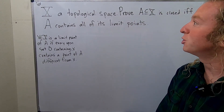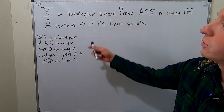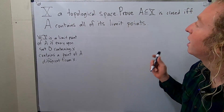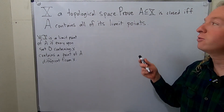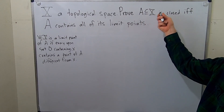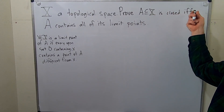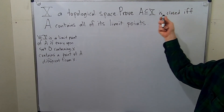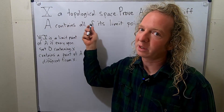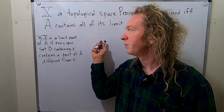In this video we're going to do a topology proof. Here X is a topological space. We're going to prove that a subset A of capital X is closed if and only if A contains all of its limit points.